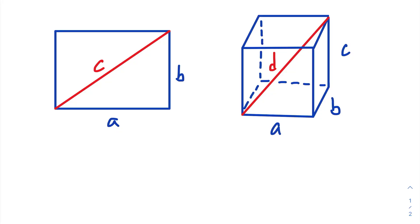In this video, we're going to learn how to find the length of a space diagonal. If you didn't know what it is, a space diagonal is a line that connects two points that are not on the same face of a 3D object. So for example, in this rectangular prism,